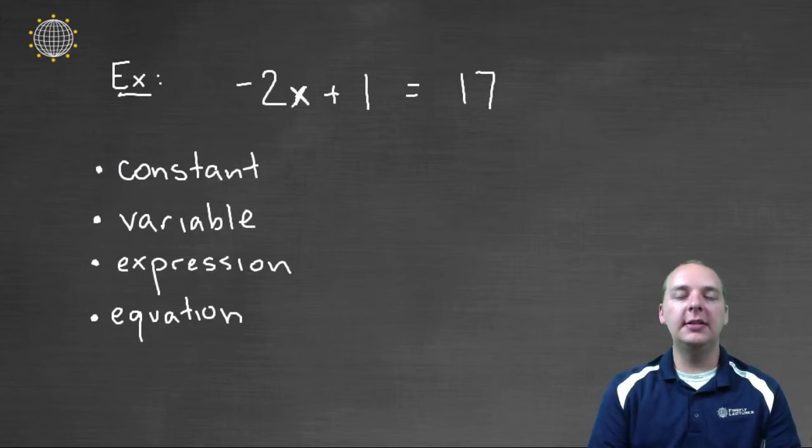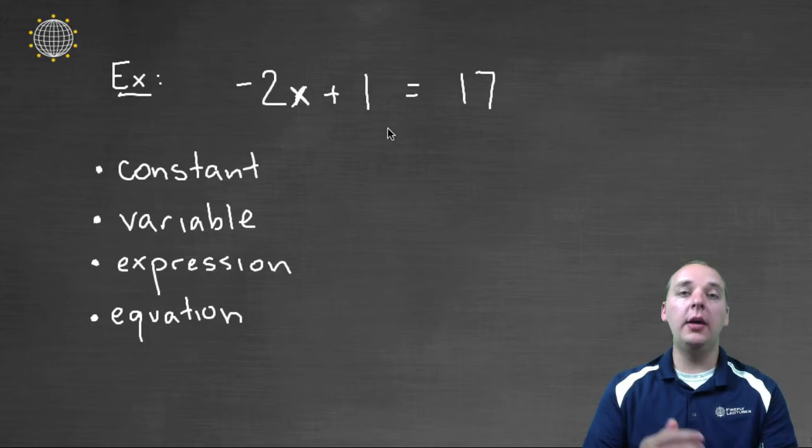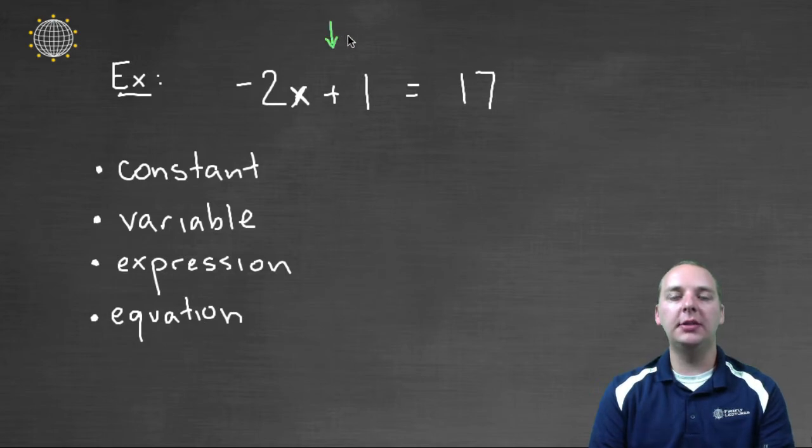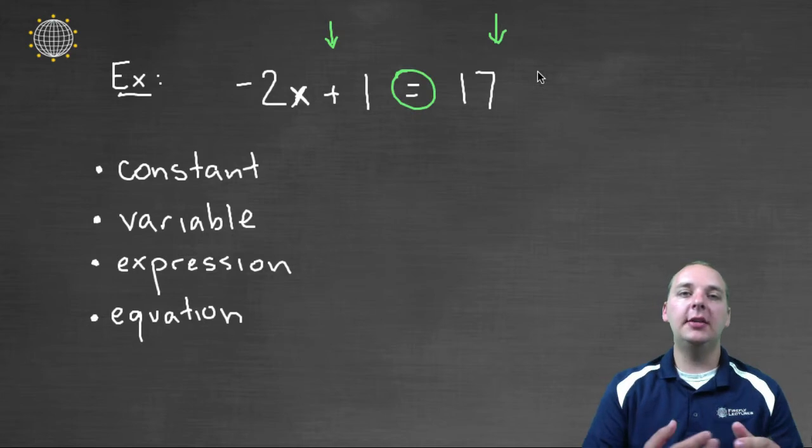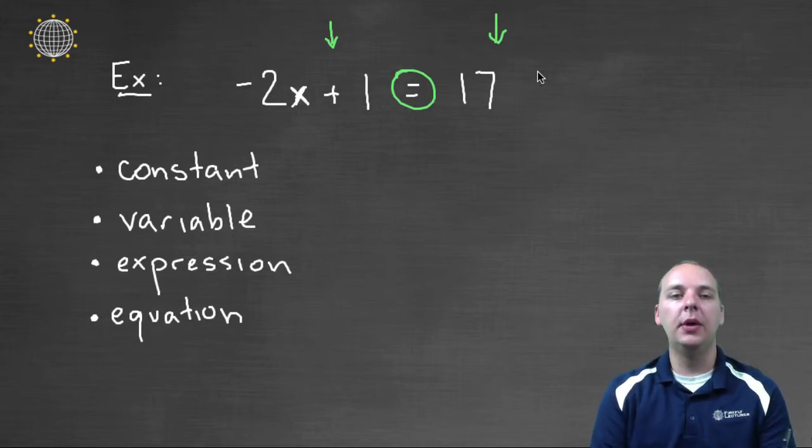Our next example, we have negative 2x plus 1 equals 17. I see some constants - a negative two, a one, a seventeen. I see a variable, I've got an x. But this time I have one expression set equal to another expression. That tells me that there must be right and wrong answers here for this example. That means that this is an equation.